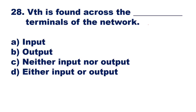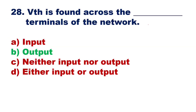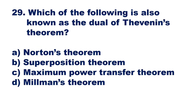Question 28: VTH is found across the dash terminals of the network. It is found across the output terminals. Option B, output, is the right answer. According to Thevenin's theorem, VTH is found across the output terminals of a network, not the input terminals.